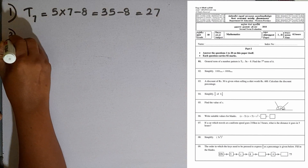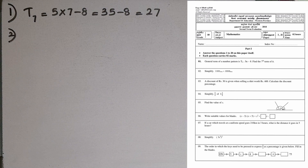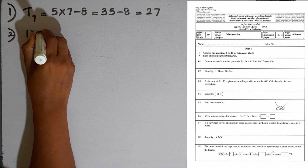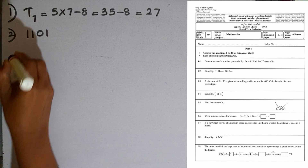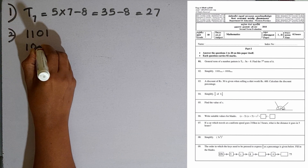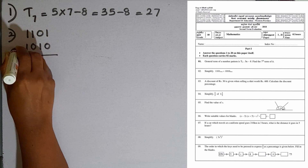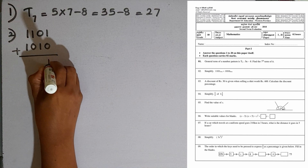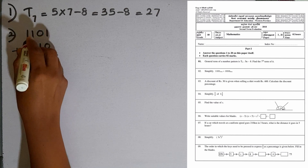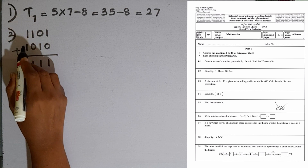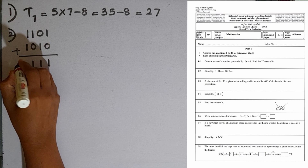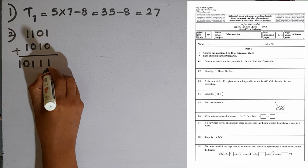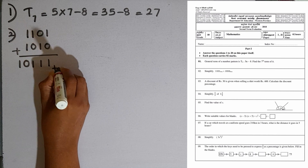In the second question, simplify. We are given two binary numbers to add: 1101 and 1010. We add them column by column: 0 plus 0 is 0, 1 plus 1 is 0 carry 1, 1 plus 0 is 1, and the leading 1 plus 1 gives 1 and 0. So the result is 10111, which is the answer to the binary addition.